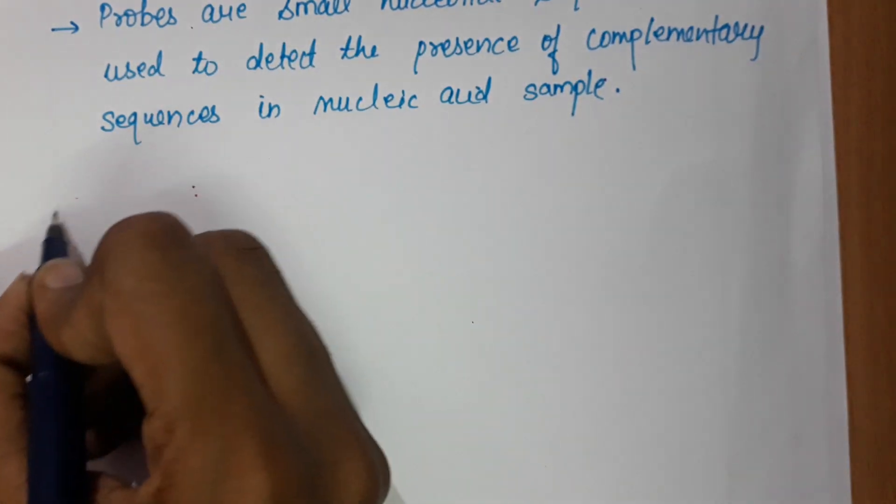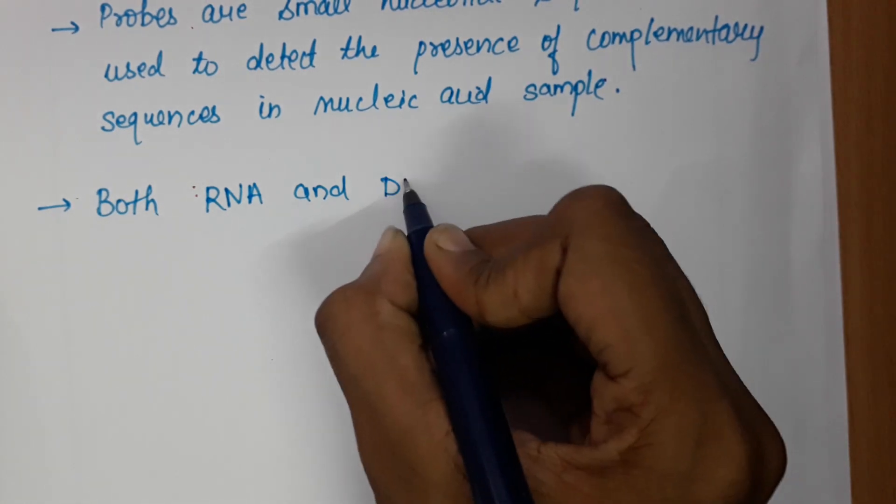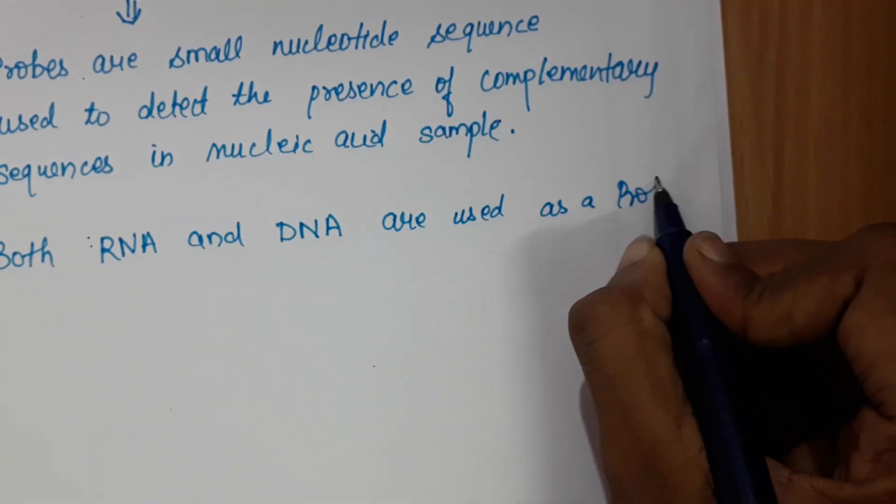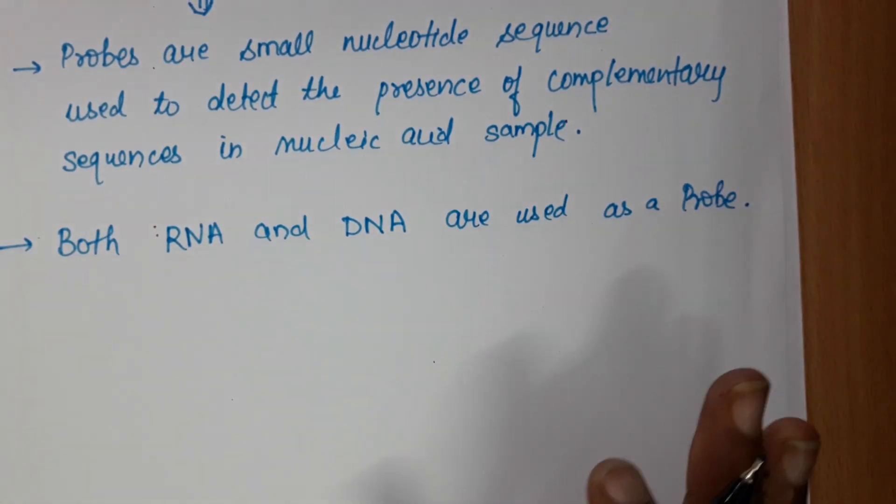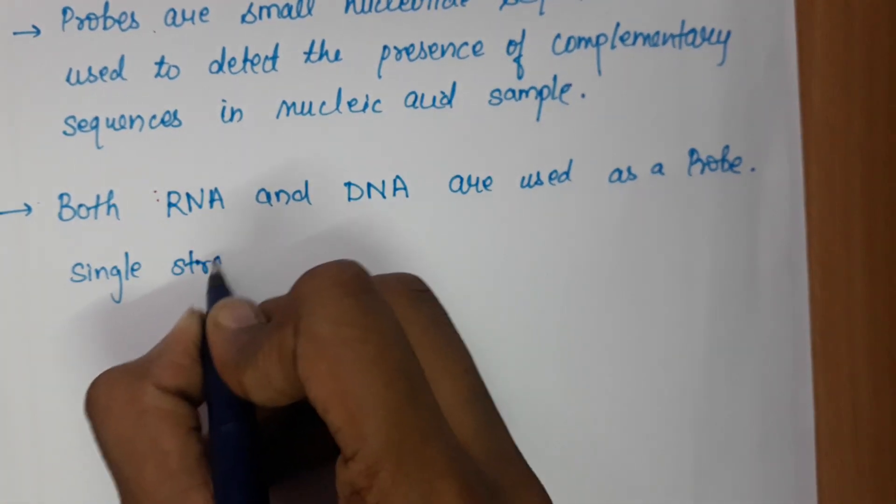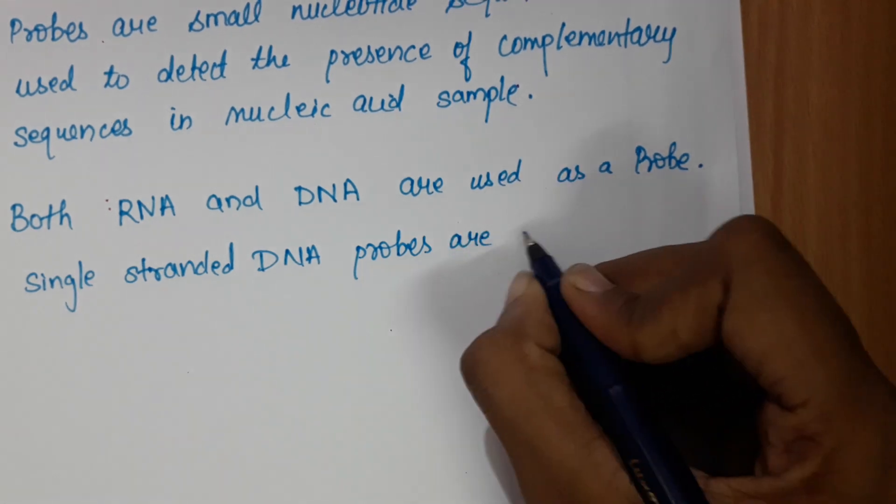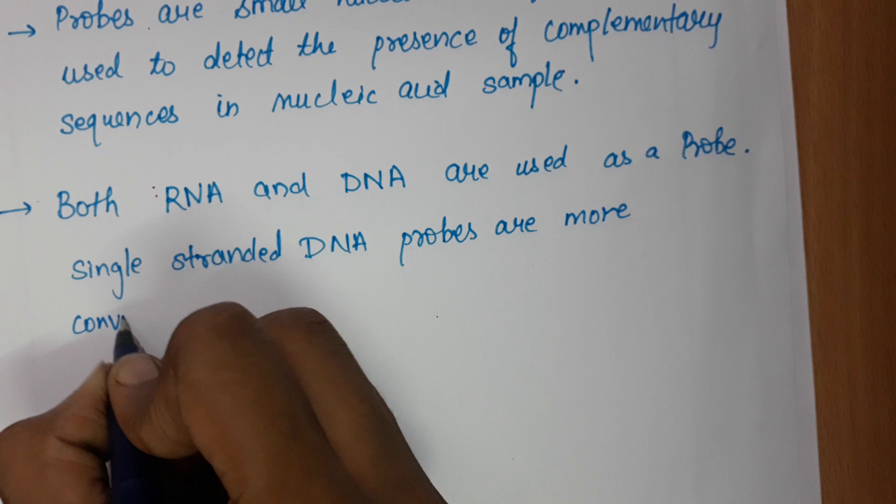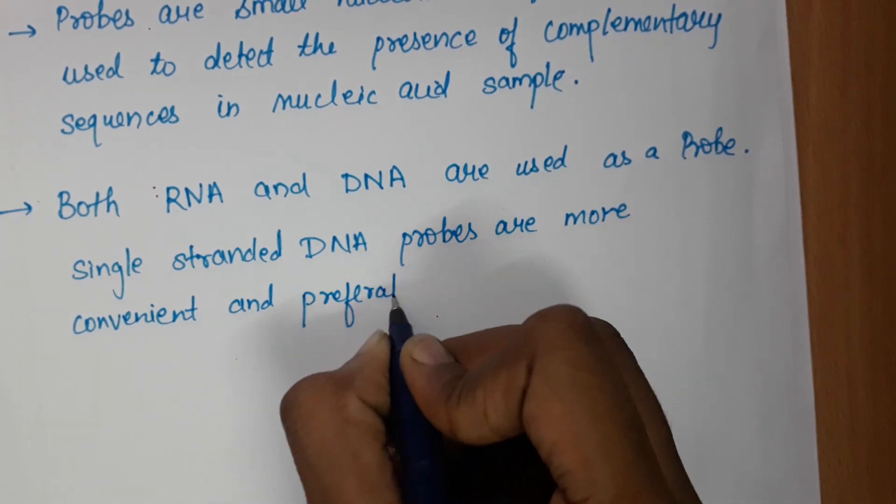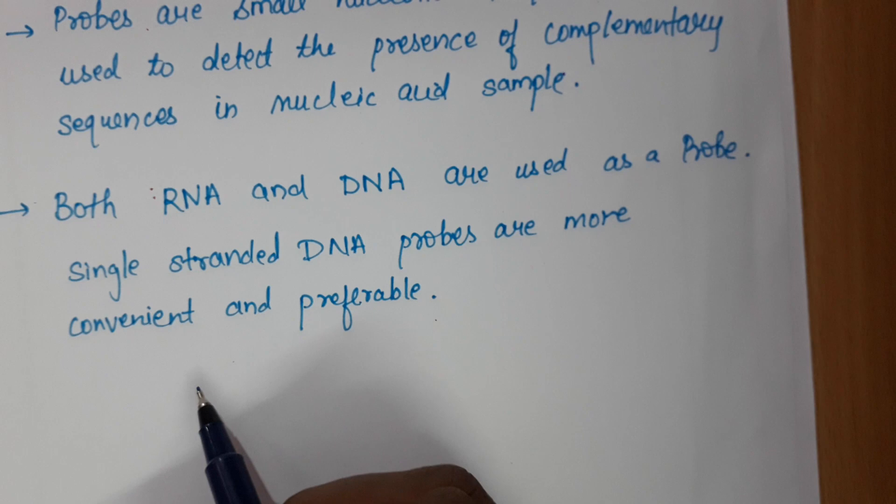Both RNA and DNA are used as probes. However, single-stranded DNA probes are more convenient and preferable.